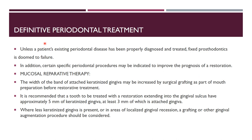Coming to the fourth modality — periodontics. Definitive periodontal treatment must be done; unless a patient's existing periodontal disease has been properly diagnosed and treated, fixed prosthodontics is doomed to failure. Certain specific periodontal procedures may be indicated. Mucosal reparative therapy: the width of the band of attached keratinized gingiva may be increased by surgical grafting. As part of mouth preparation before restorative treatment, it is recommended that the abutment tooth to be restored with a restoration extending into the gingival sulcus have approximately 5 mm of keratinized gingiva, at least 3 mm of which is attached gingiva.